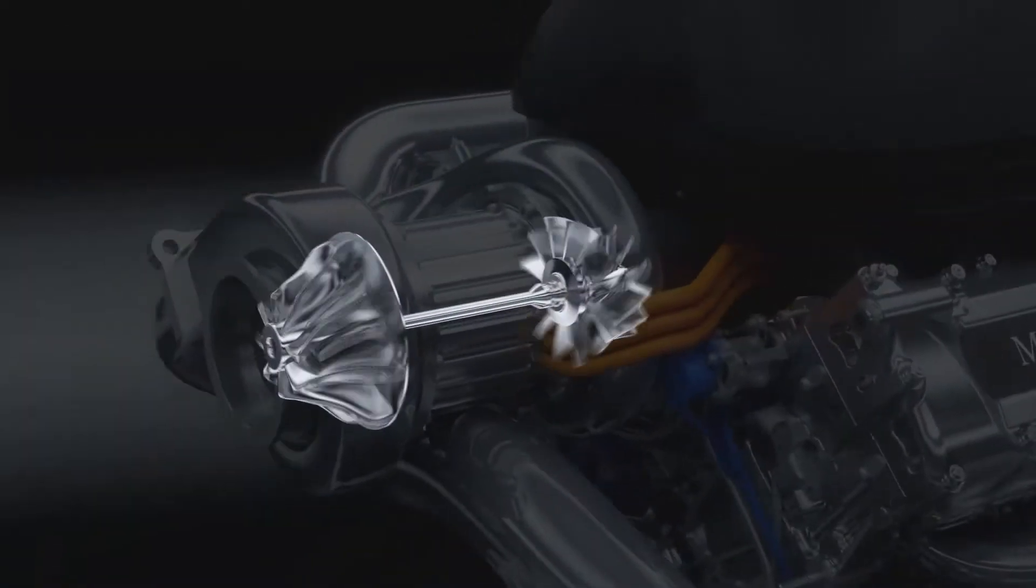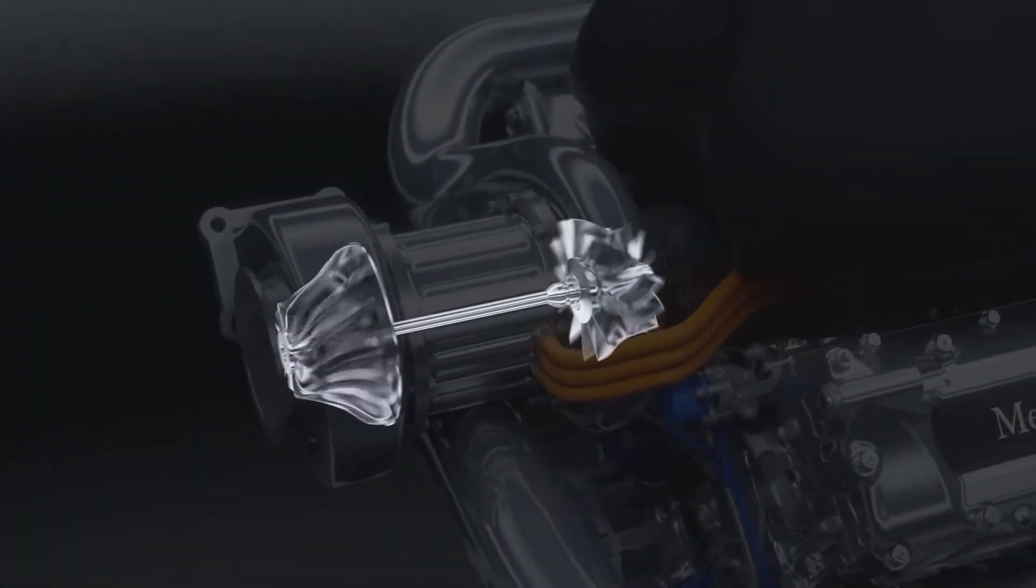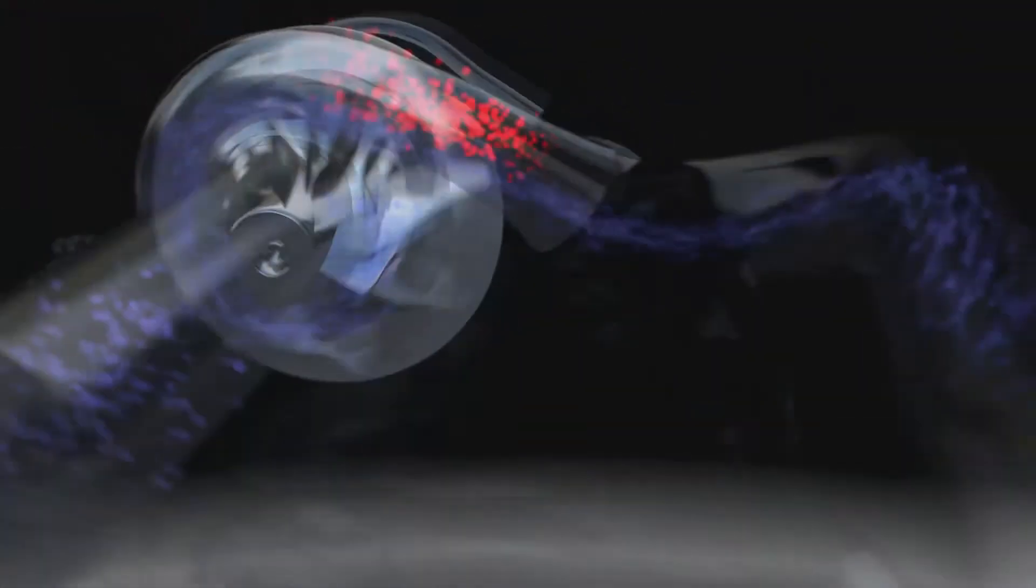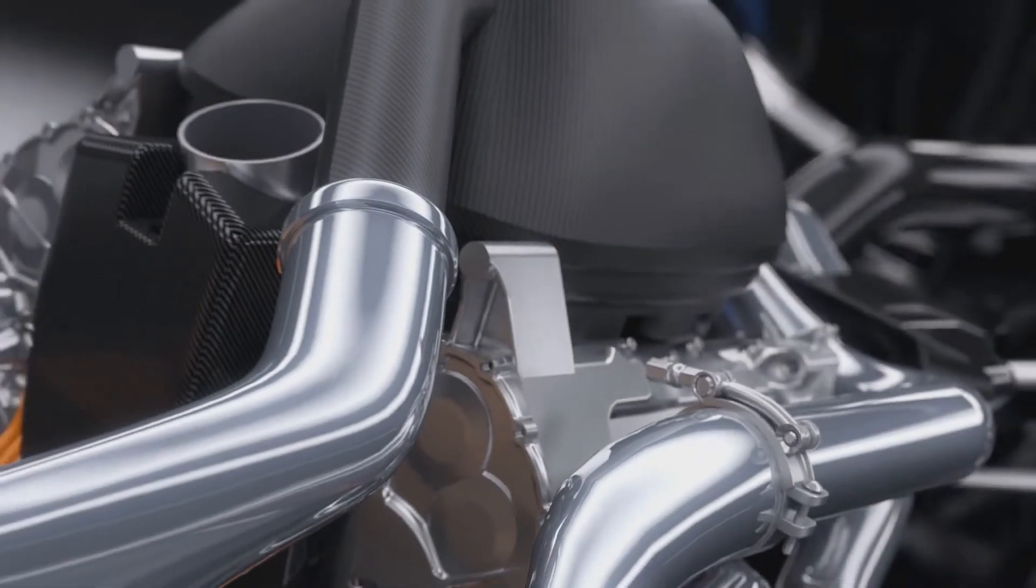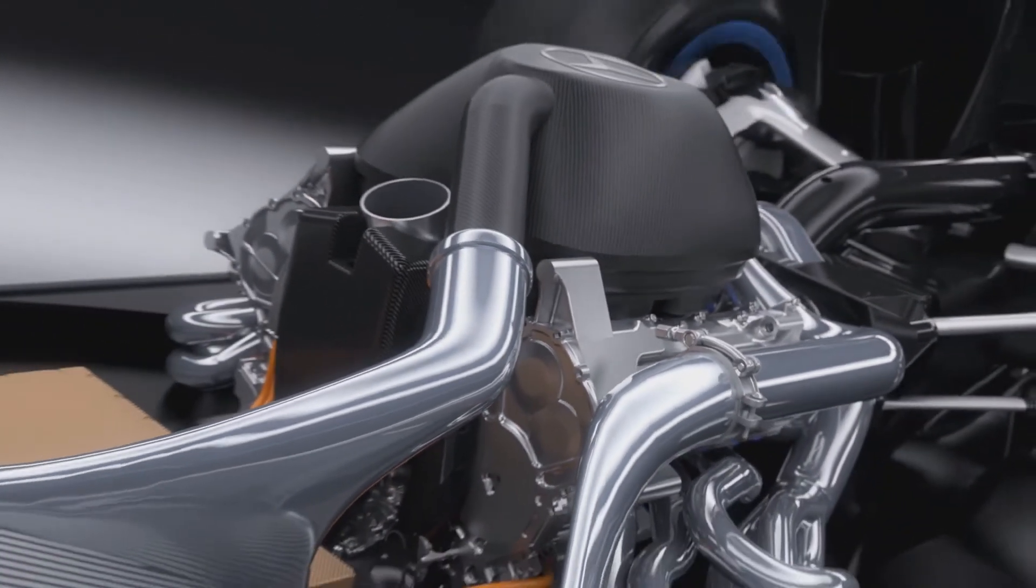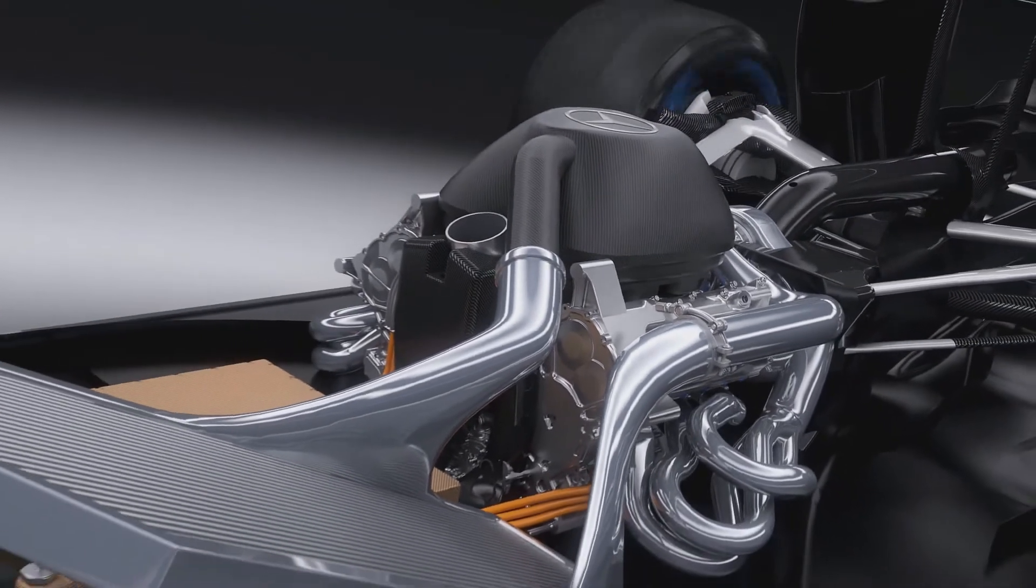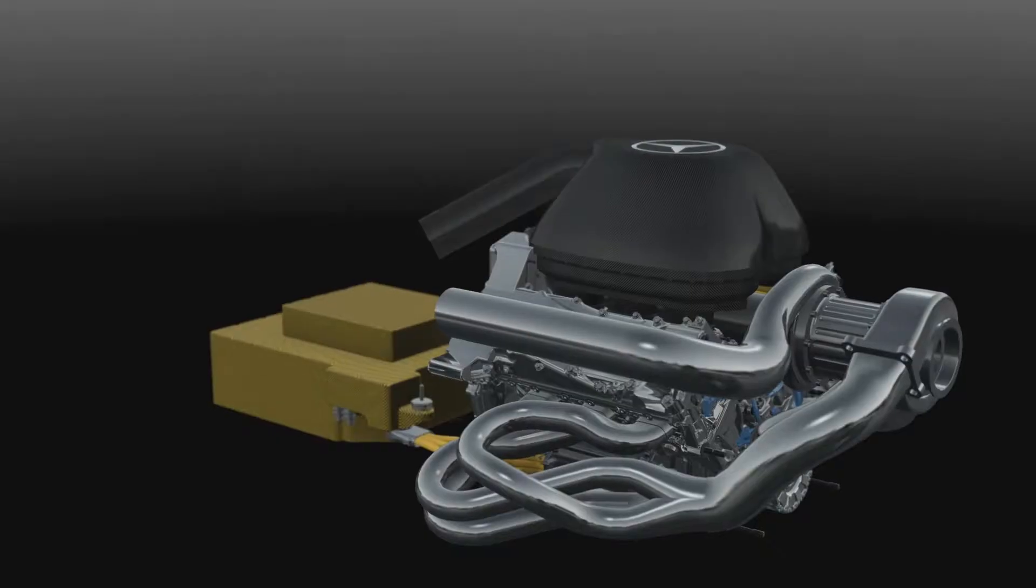It is achieved with a down-sized 1.6-litre turbo-hybrid engine. The turbo uses exhaust gases to drive a compressor to push more air and therefore more oxygen into the engine. Together with high-pressure direct fuel injection, this makes combustion more efficient, delivering more power using less fuel.